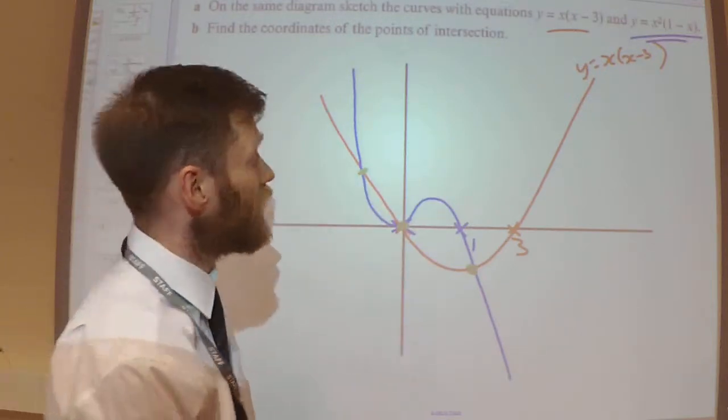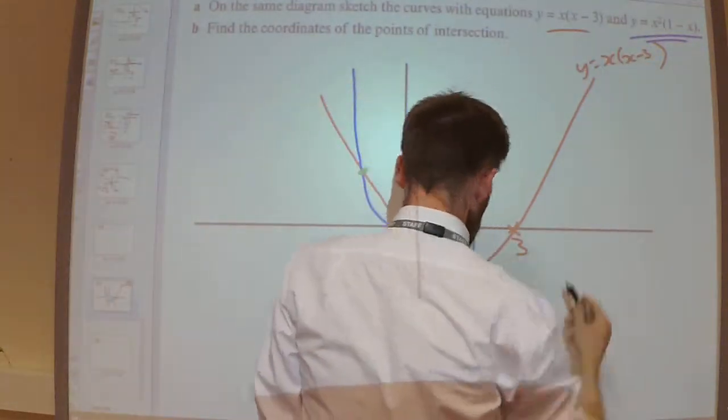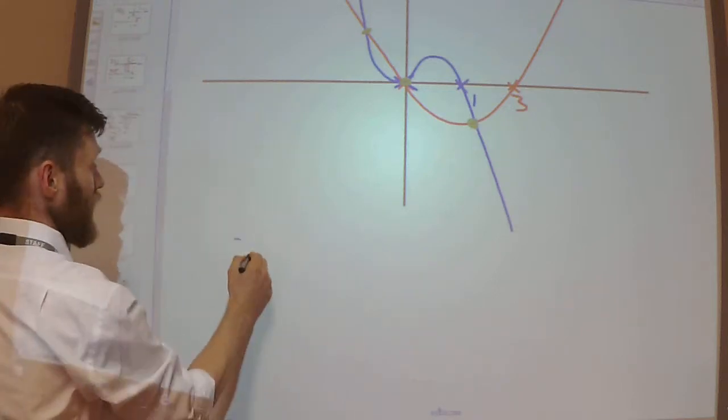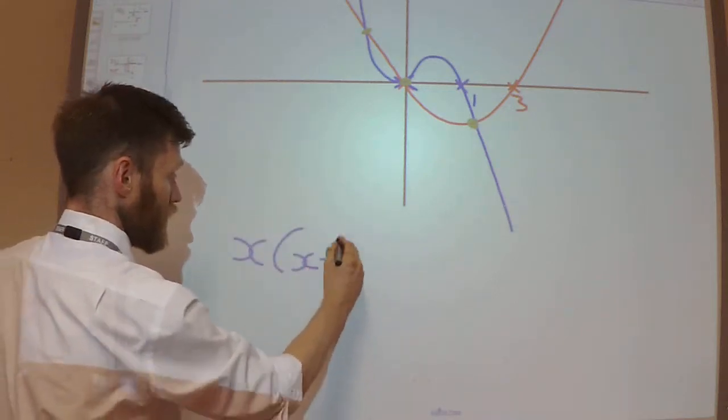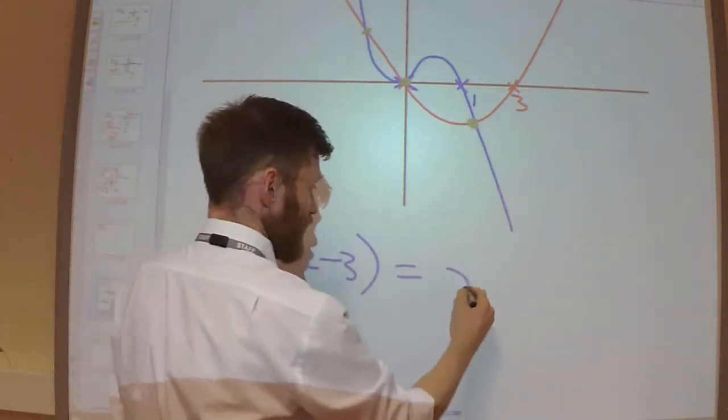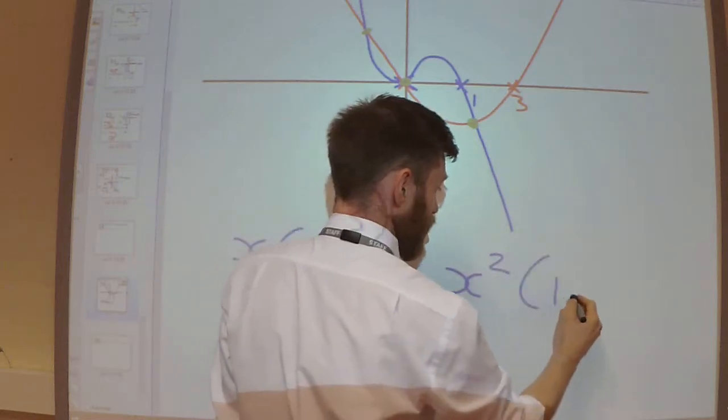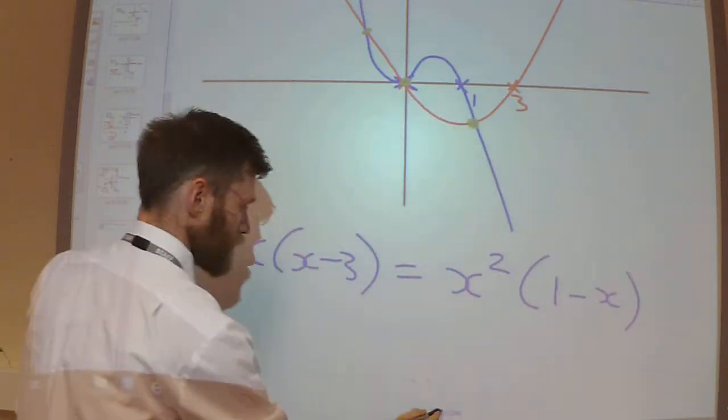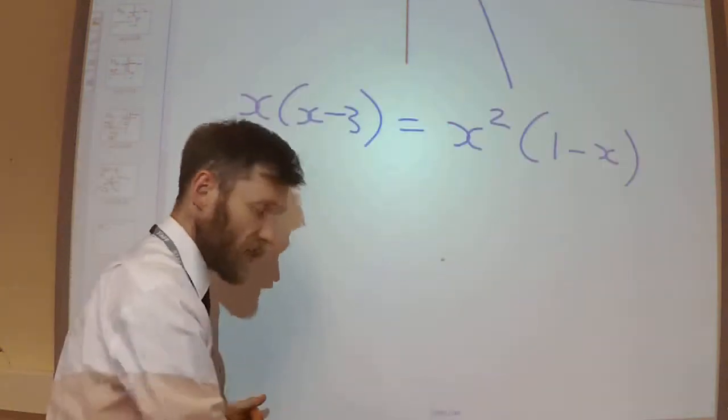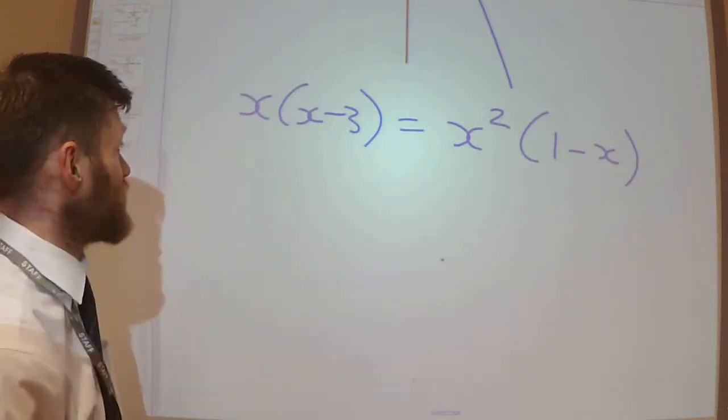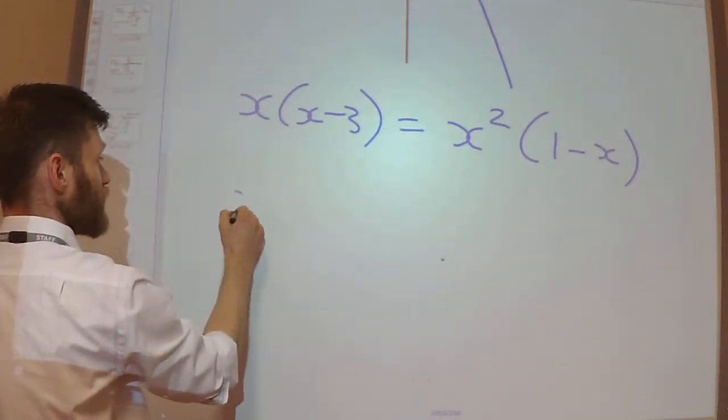But to find the other ones, the y coordinates are going to be equal to each other. So let's make x(x-3) equal to x²(1-x). So we're just solving it like we would any simultaneous equation. Let's expand out the brackets.